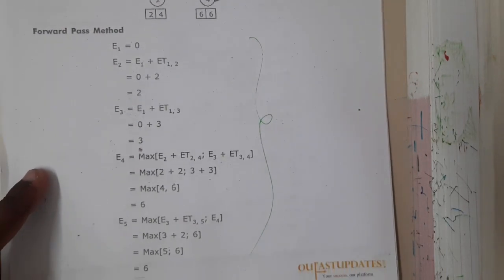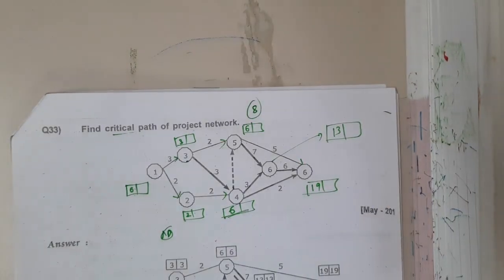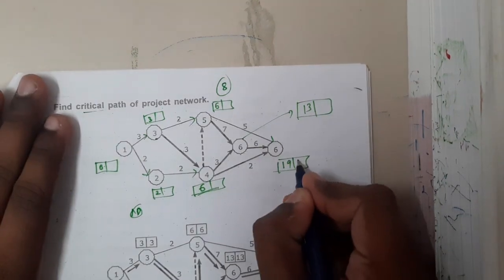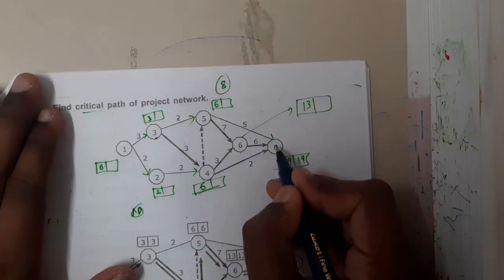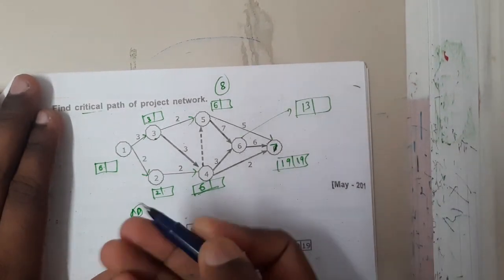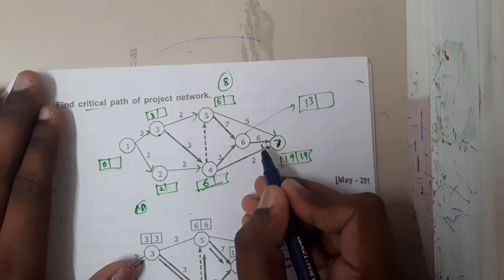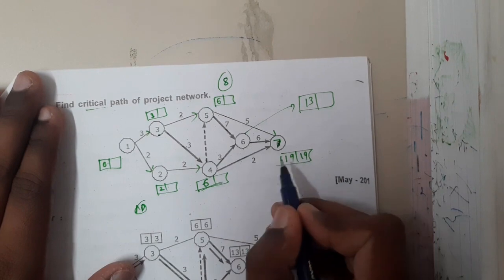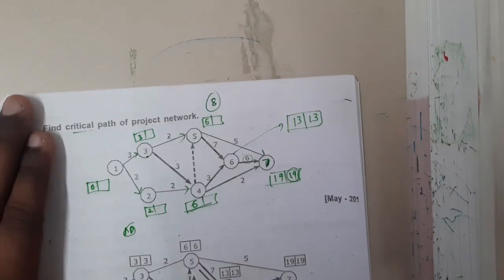I explained the entire forward pass quickly, but make sure you write it step by step. The book also has step-by-step explanation, so please check and solve it accordingly. Now we are done with the forward path. For the backward path, you start at the end value of nineteen and move back step by step.